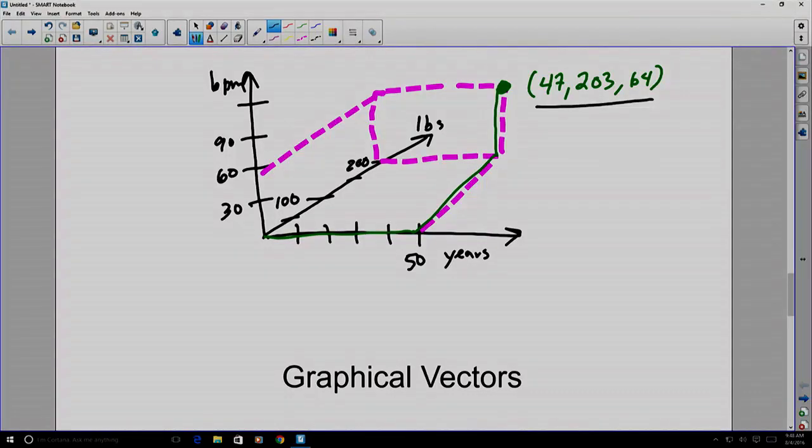You might recall us discussing a vector as multiple pieces of information describing one entity. For example, in this picture above, we had three pieces of information: an age, a weight, and a heart rate in beats per minute, all describing one person, but all represented in physical space with a particular point drawn in three-dimensional space to represent the three dimensions of the information.